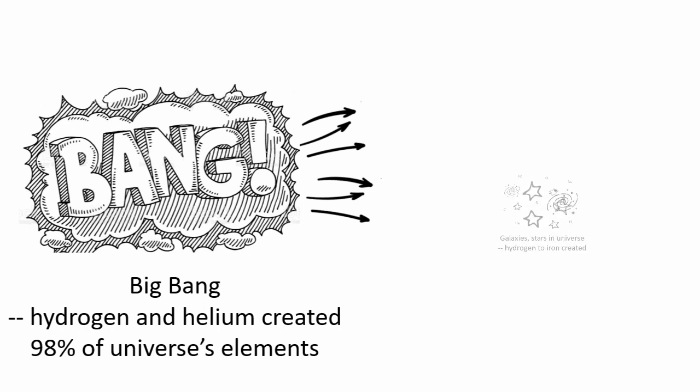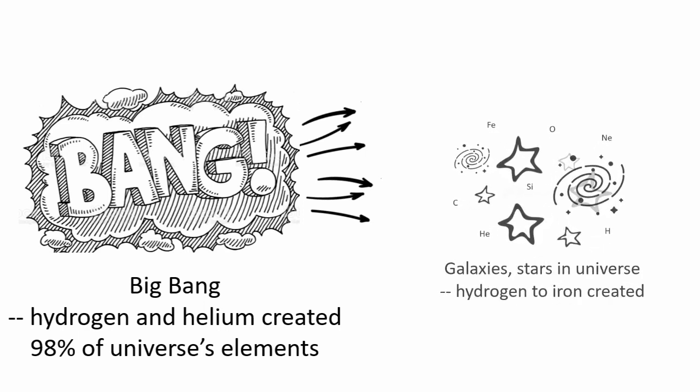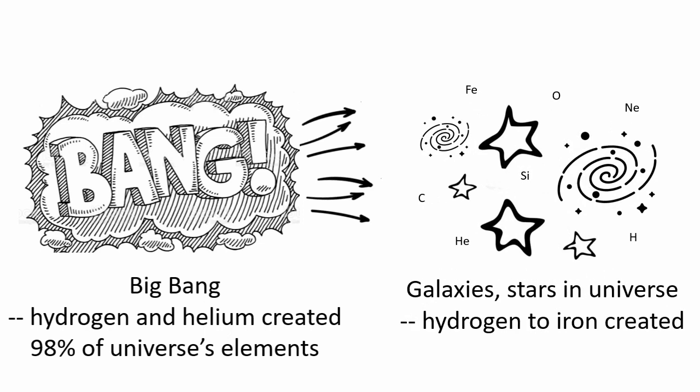The stars forged the elements up to iron. Under tremendous heat and pressures, elements are formed starting by the fusion of hydrogen and helium. Stars shine because of the energy given off by the fusion process.